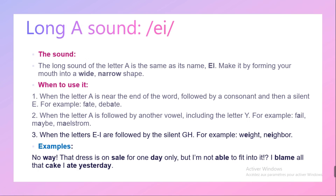Let's see the sound more in depth. The long sound of the letter A is the same as its name: /eɪ/. Make it by forming your mouth into a wide narrow shape. When do we use this sound? When the letter A is near the end of the word followed by a consonant and then a silent E.